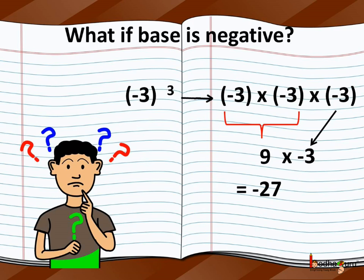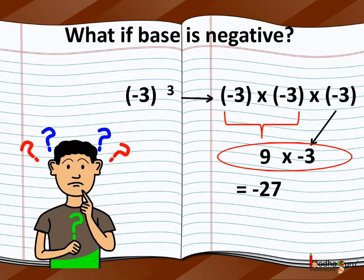We know the product of two negative numbers is positive. So, minus 3 multiplied by minus 3 is equal to 9. And the product of a positive and a negative number is negative. So, 9 multiplied by minus 3 is equal to minus 27.